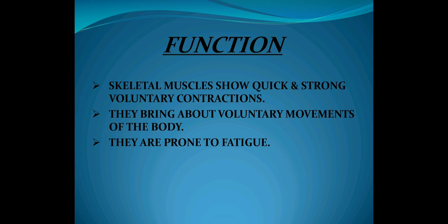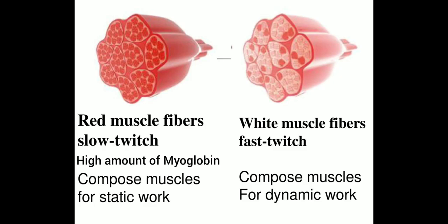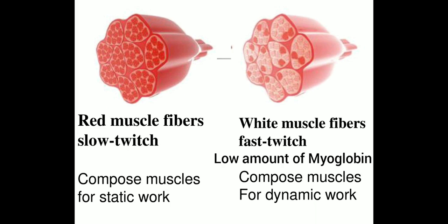The function of skeletal muscle: it shows quick and strong voluntary contractions and brings about voluntary movement of the body. As these muscles undergo strong voluntary contractions, they are more prone to fatigue. On the basis of the amount of red pigment, skeletal muscles are of two types: red and white muscles. Red muscles contain a very high amount of myoglobin, while white muscles contain a very low amount of myoglobin.